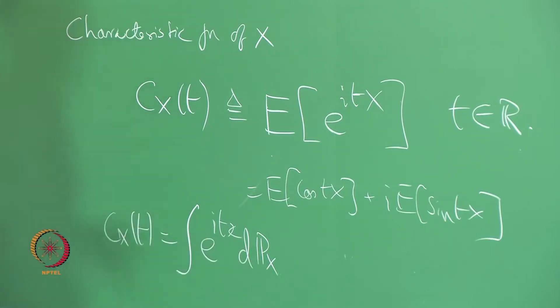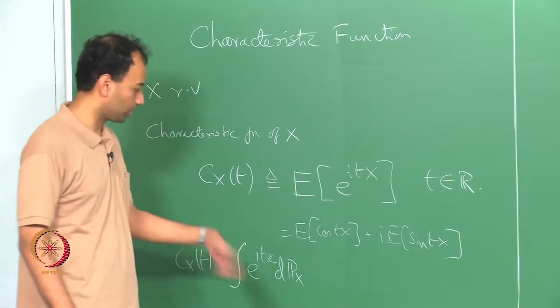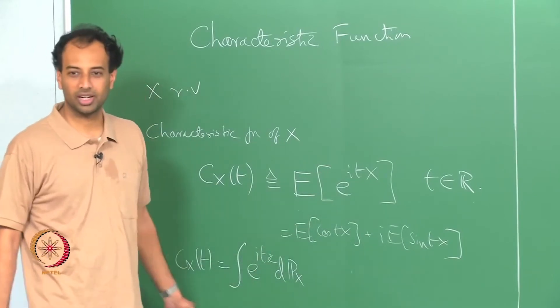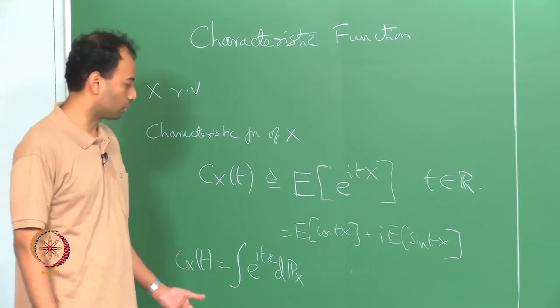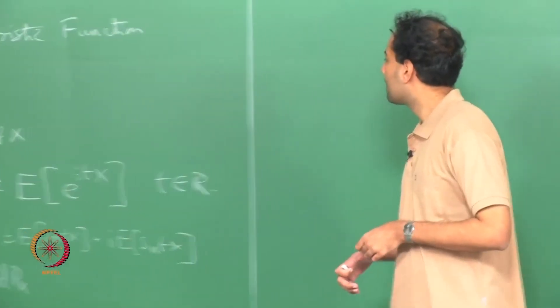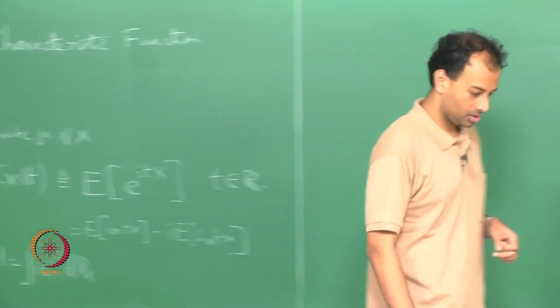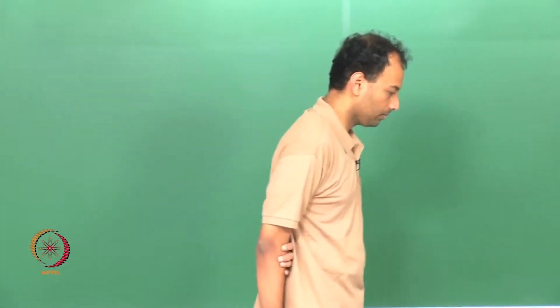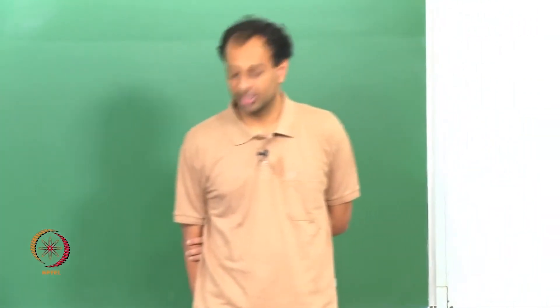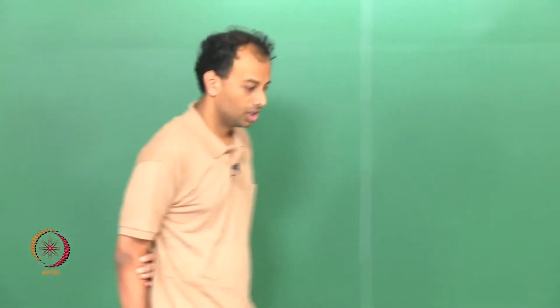Given your probability law you can compute the characteristic function. Here e^{itx} is just cos(tx) plus i·sin(tx), so you can evaluate the real and imaginary parts as usual. This characteristic function is analogous to a Fourier transform, just like your moment generating function is analogous to a Laplace transform.